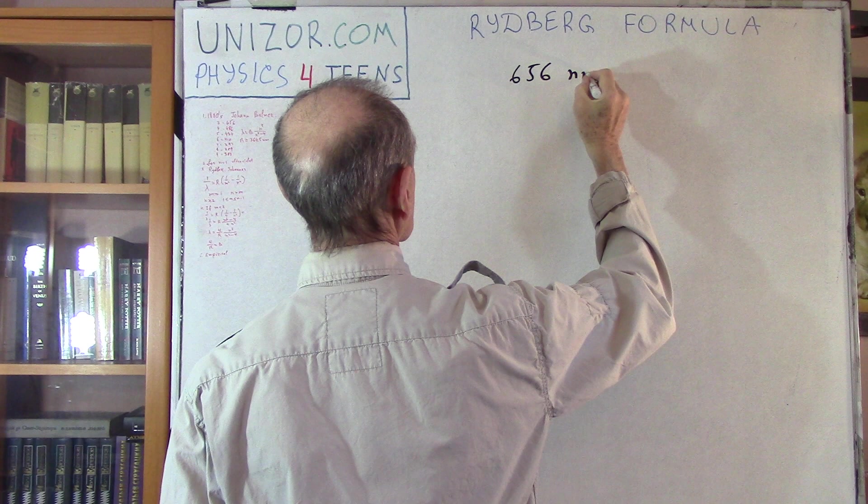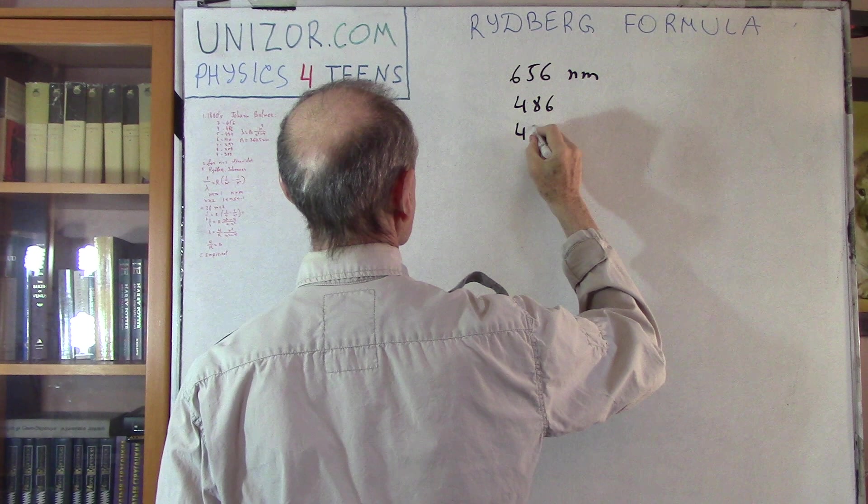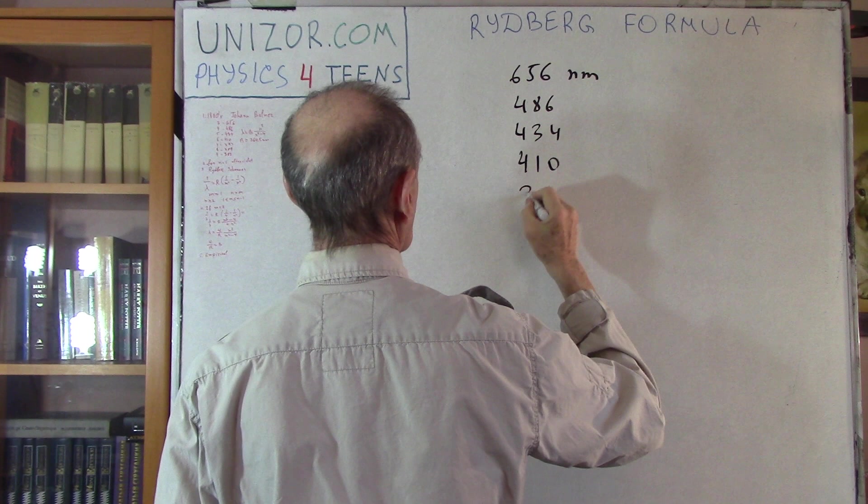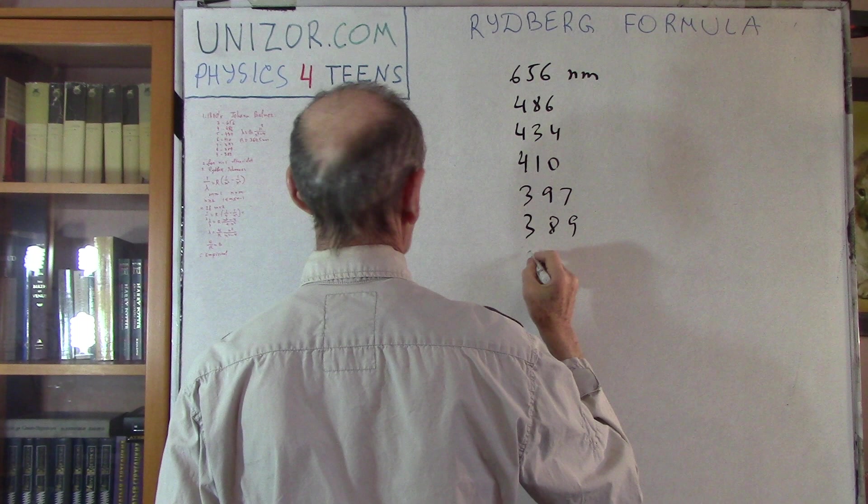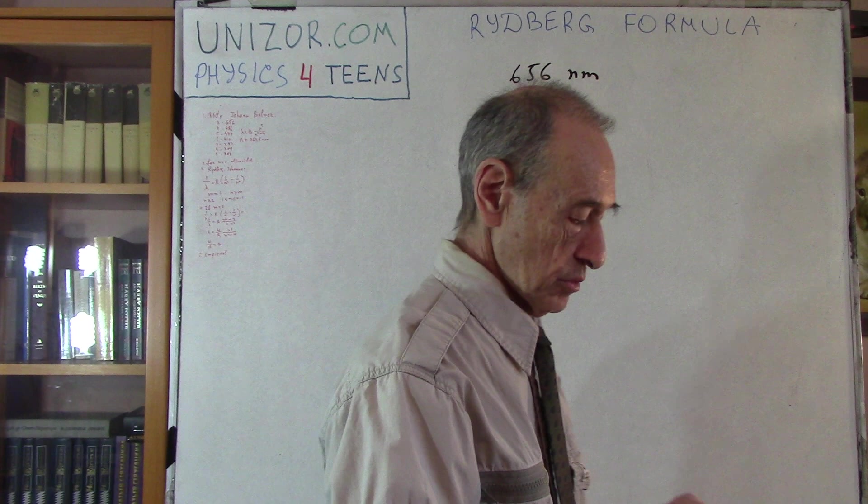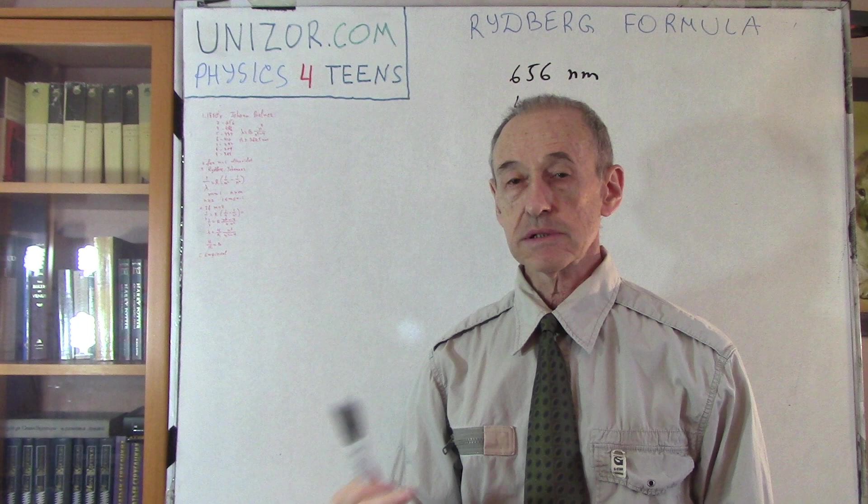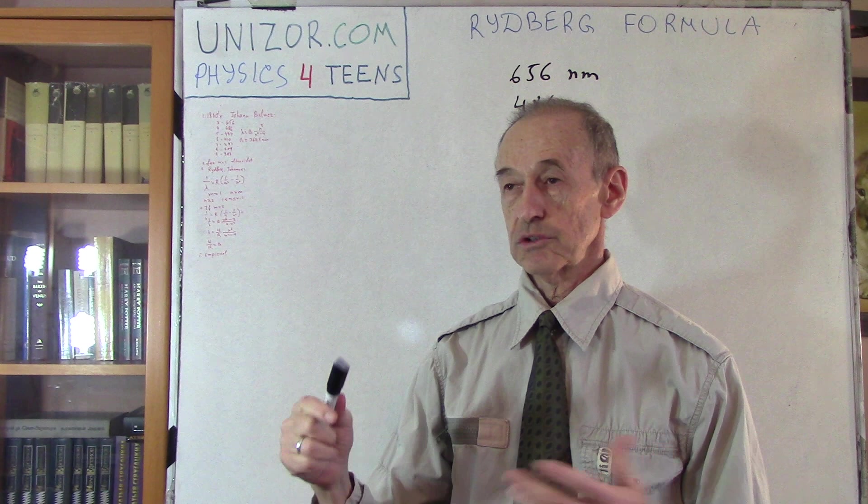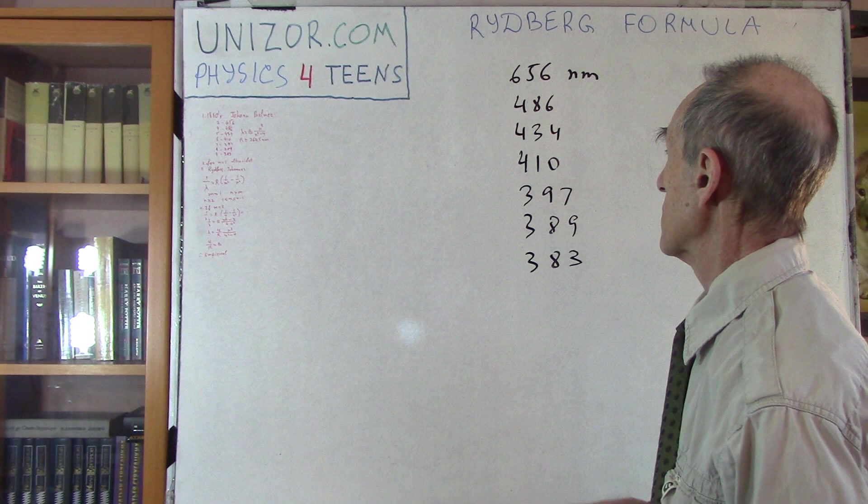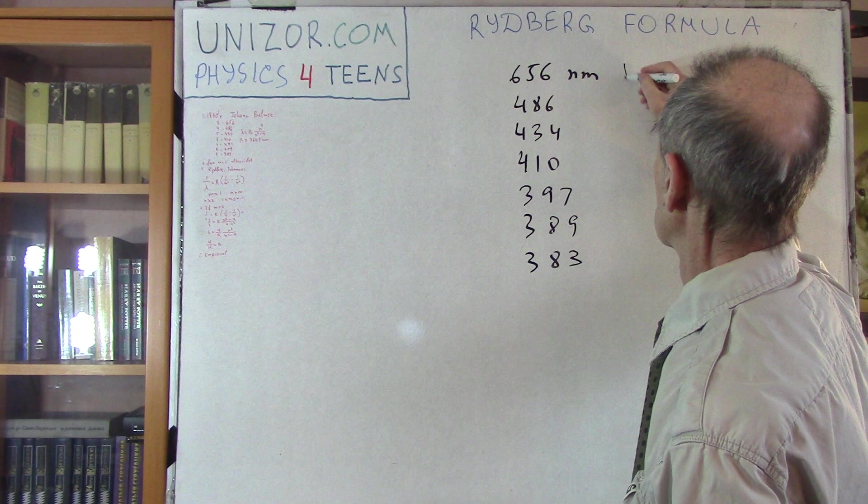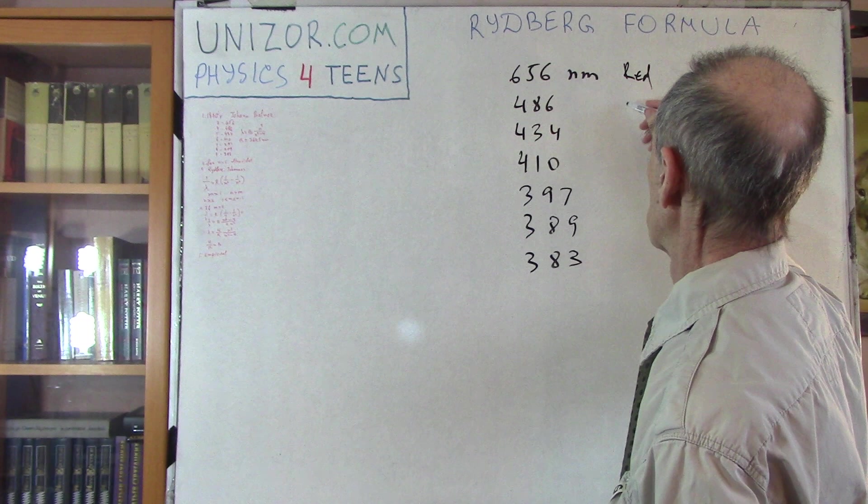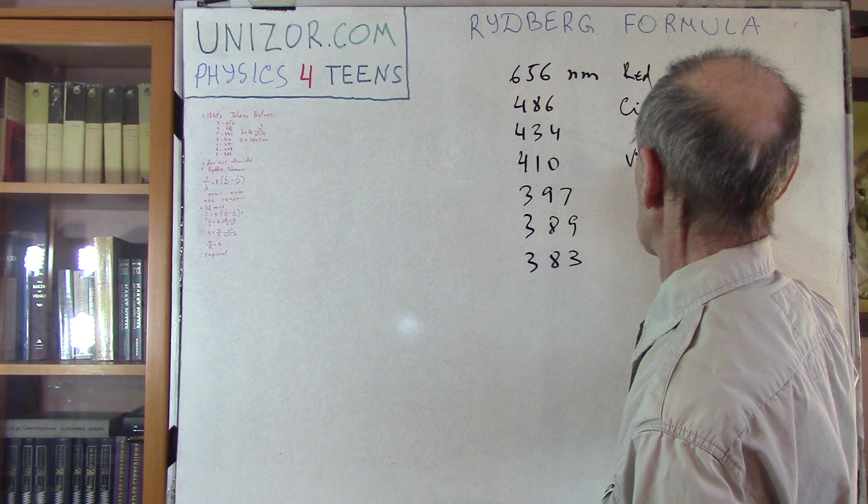Let me just give a few of them. I have it written here. 656 nanometers, 486, 434, 410, 397, 389, and 383. These were just few spectrum components. These are wavelengths of certain lights emitted by agitated hydrogen, heated or electrified, whatever. And they correspond to certain colors. I think this one is red. This is something like, I don't remember, maybe cyan. These are definitely violet. And these are all violet.